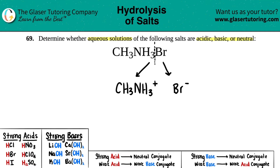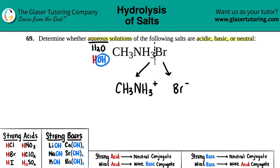To find out whether this is acidic, basic, or neutral, remember that in an aqueous solution we start with H₂O, which always has one hydronium and one hydroxide. Opposites attract: the positive hydronium hooks up with the negative bromine, and the negative hydroxide hooks up with the positive methylamine. This gives us CH₃NH₃OH and HBr.